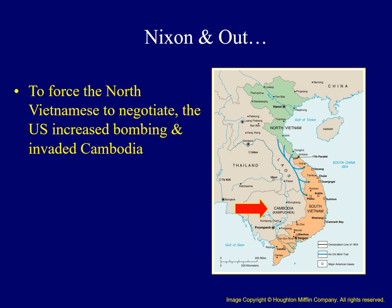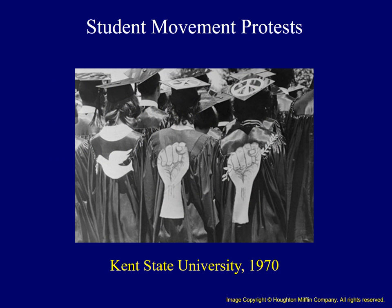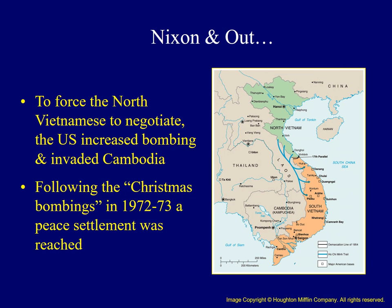In order to pressure the North Vietnamese to come to the bargaining table, Nixon expanded the war by invading the neutral nation of Cambodia, which had become a staging ground for North Vietnamese forces. When Nixon's actions became public, students all over the country protested. At Kent State University, the National Guard was called out to stop the student protest, and four students were killed with several others wounded. Following the Christmas bombings of late 1972 and early 1973, a peace agreement was reached between the Americans and the North Vietnamese.